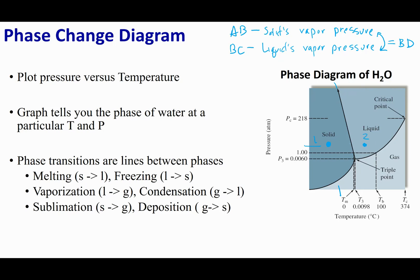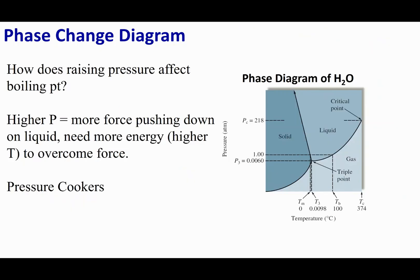I can also mark points 1 and 2 on the diagram. If I try to go from point 1 to point 2, any line I cross tells me what phase change will occur. In this case, going from solid to liquid is the melting process. Going from point 2 to point 3 crosses the liquid-gas barrier, which is vaporization. This diagram tells you what phase changes will occur as you move from one point to another, and also the effects pressure has on a phase change.